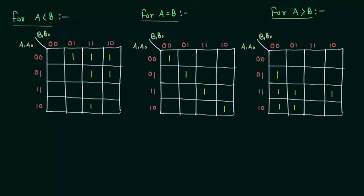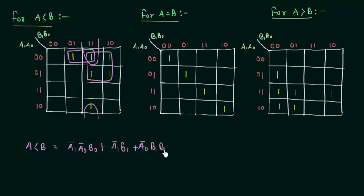For the first case when A is less than B, this is my first group. We are left with two ones. So this is my second group and this is my third group. So A less than B is equal to A1 complement A0 complement B0 or A1 complement B1 or A1 complement A0 complement B1 B0.